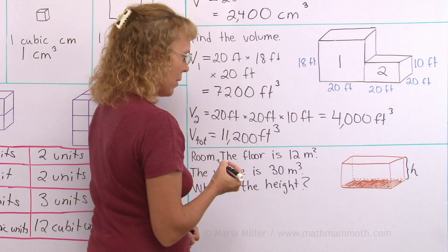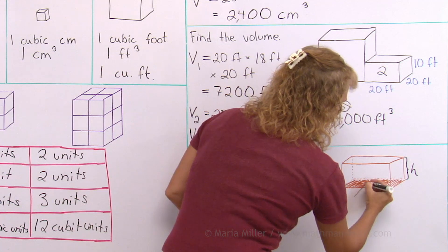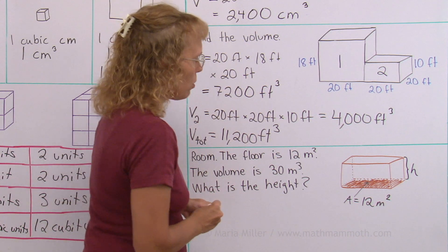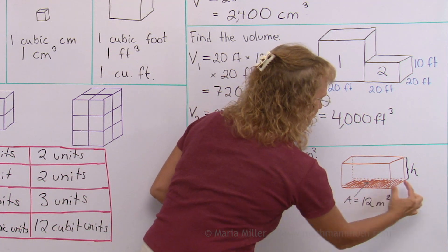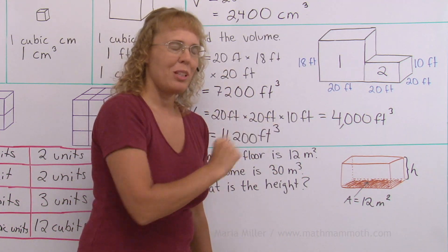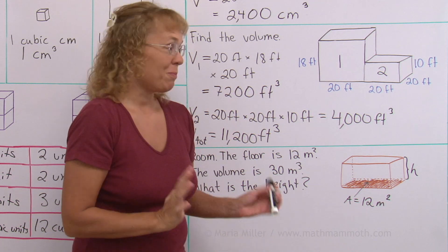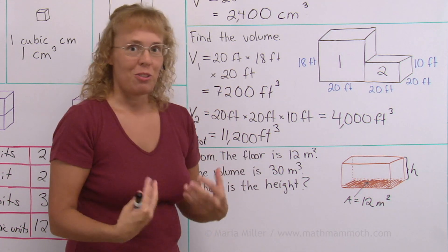It is asking for this. This is the unknown, the height of the room. And we know the area here. Notice we are not told the width and the depth of the room. That could be 6 and 2 meters, or 4 and 3 meters, whatever. But we don't need to know that.